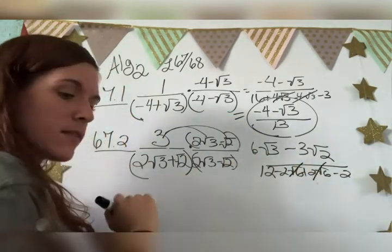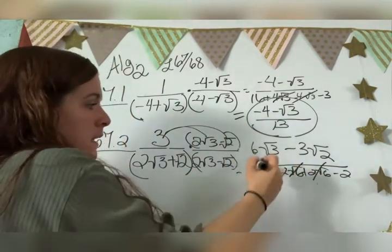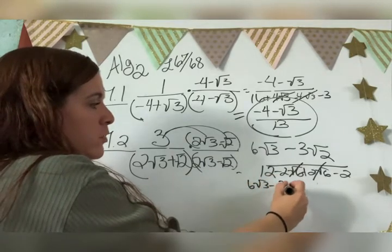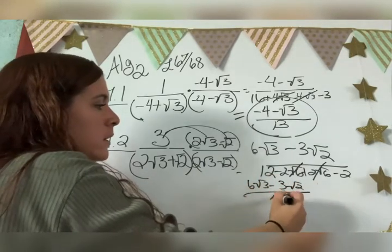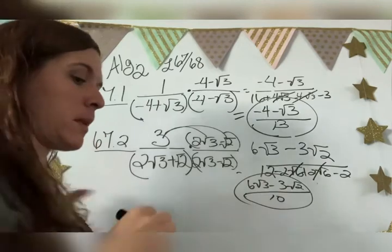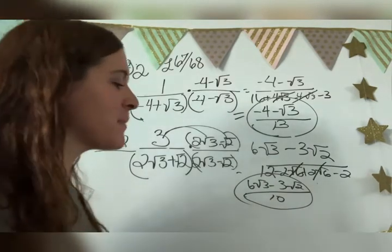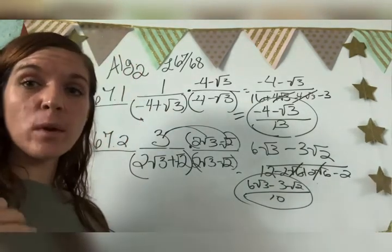This and this is canceled. And we get 6 square root 3 minus 3 square root 2 over 10. Bada ding, bada ding, bada boom, and finally it's the right answer. Okay, then that's it for this one.